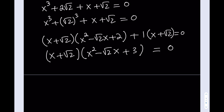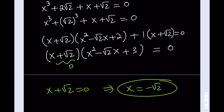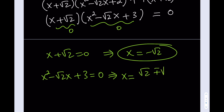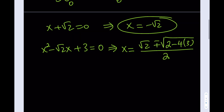The next step is to use the zero product property. So if this equals 0, then x equals negative square root of 2, which is one of the solutions. The other solution comes from the quadratic. Setting that equal to 0 and using the quadratic formula: x equals negative b plus or minus the square root of b squared — which is 2 — minus 4 times a times c, and c is positive 3, divided by 2a where a is 1. What we have under the radical is a negative quantity, so we won't get real solutions. 2 minus 12 is negative 10, so this turns into square root of 10 times i, with plus or minus in front, divided by 2.